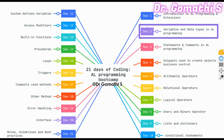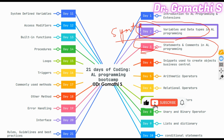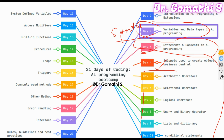We've reached the end of Day 2. Tomorrow on Day 3 we'll discuss statements and comments in AL programming — what are statements, what is a comment, what is the syntax, and how to follow AL syntax rules. On Day 4 we'll discuss snippets used to create objects in Business Central, which is very important. If you have any queries, leave them in the comment box. To access documents, join as a community member — new members need to stay for at least 30 days to access all documents. Take care and have a great day!